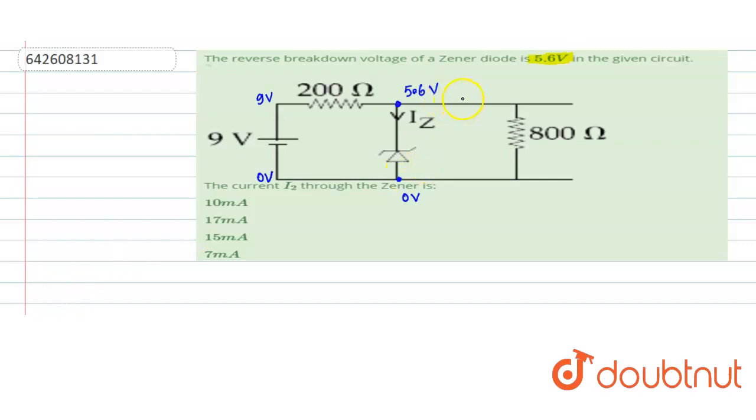Let's say the current flowing through the 800 ohm resistance is IC, and the current coming from 200 ohm is IA.